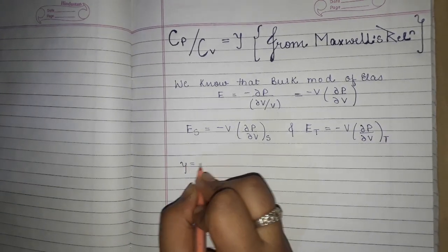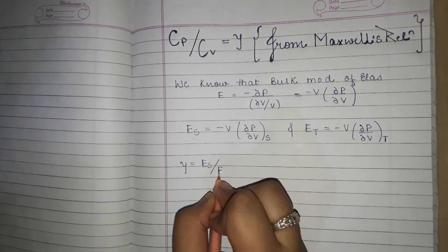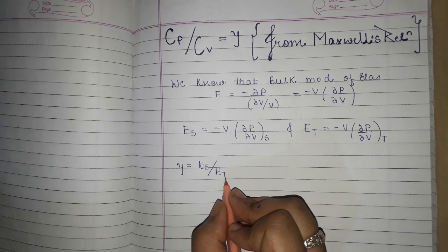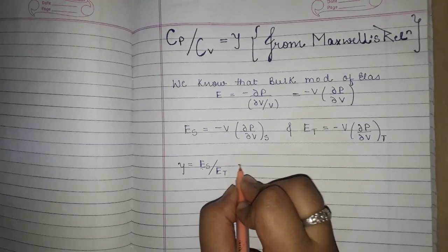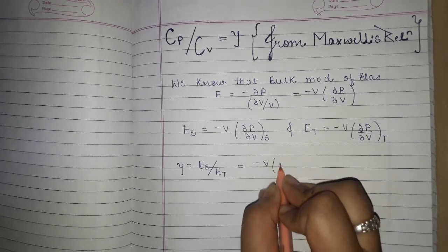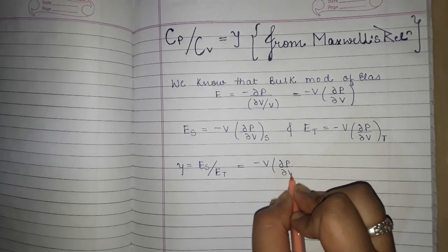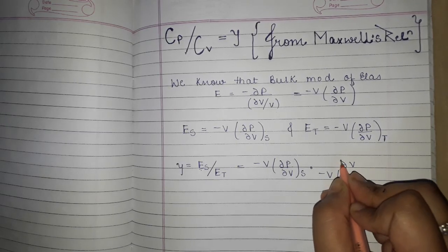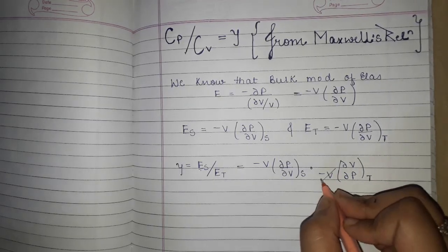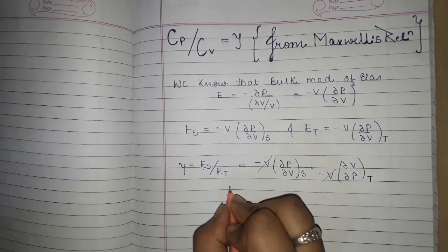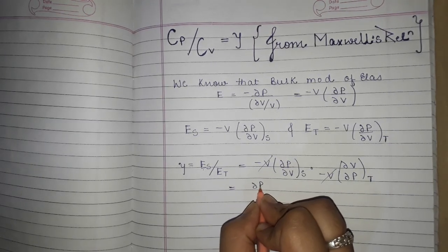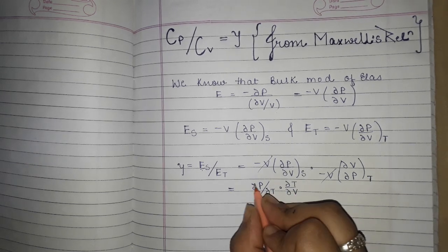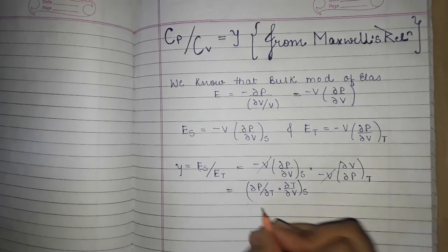Now gamma will be ES/ET, that is bulk modulus of elasticity at constant entropy divided by bulk modulus of elasticity at constant temperature. So this is [minus V (dP/dV) at constant S] divided by [minus V (dP/dV) at constant T]. The minus V cancels, giving (dP/dV at constant S) divided by (dP/dV at constant T).